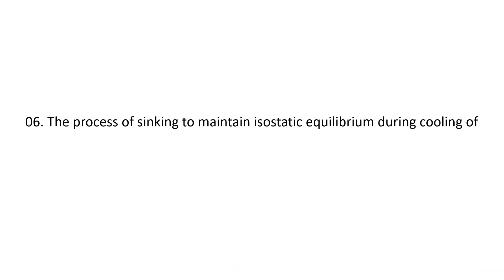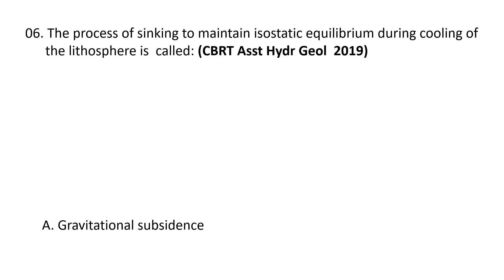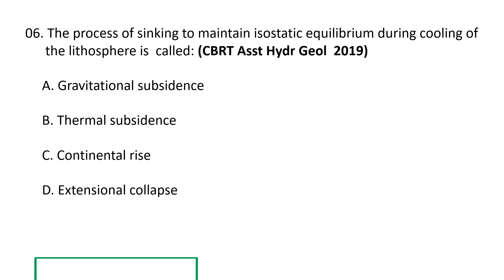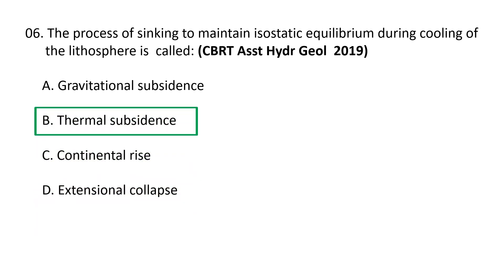Next question: the process of sinking to maintain isostatic equilibrium during cooling of the lithosphere is called: a) gravitational subsidence, b) thermal subsidence, c) continental rise, d) extensional collapse. The correct answer is b) thermal subsidence. In geology and geophysics, thermal subsidence is a mechanism where conductive cooling thickens the lithosphere and causes it to decrease in elevation, because as mantle material cools and becomes part of the mechanically rigid lithosphere it becomes denser than surrounding material.